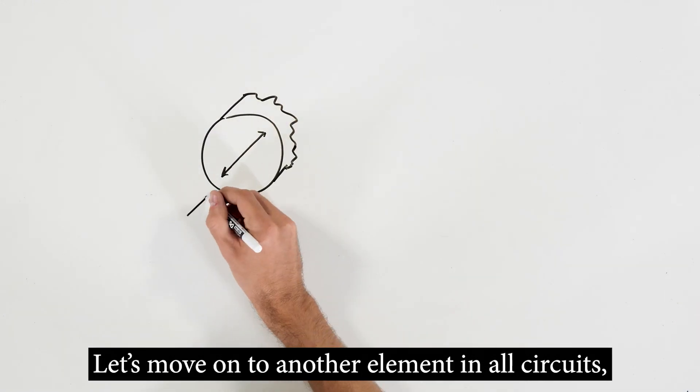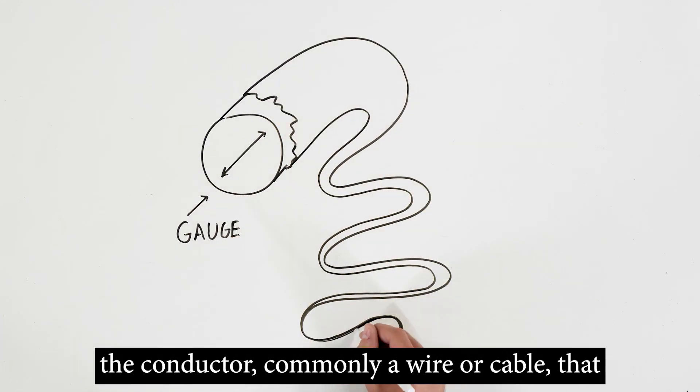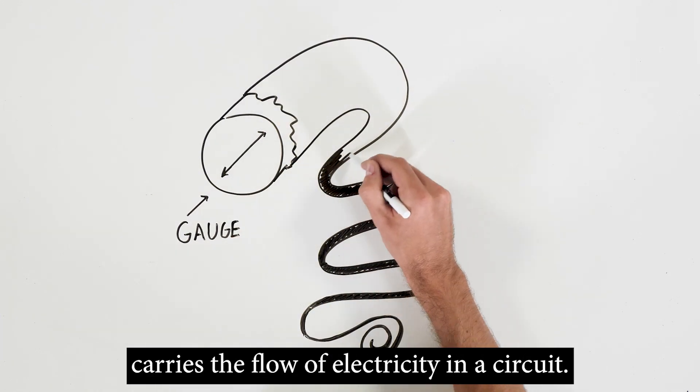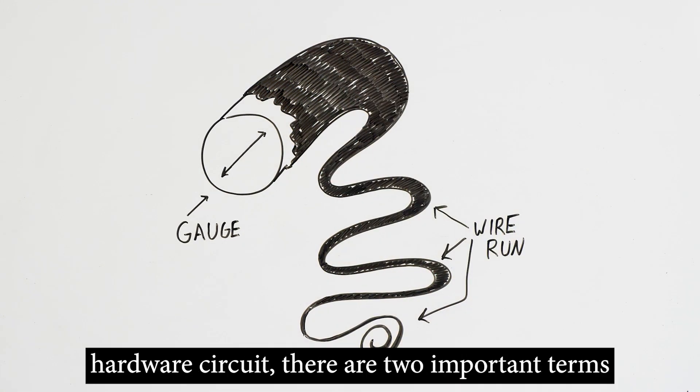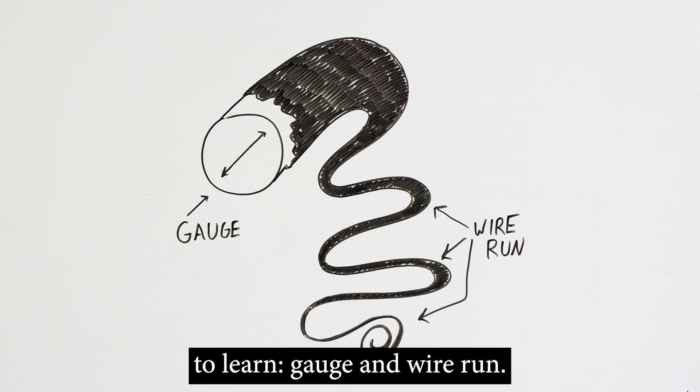Let's move on to another element in all circuits, the conductor. Commonly a wire or cable that carries the flow of electricity in a circuit. When it comes to the wires in an electrified hardware circuit, there are two important terms to learn: gauge and wire run.